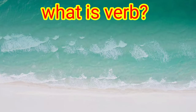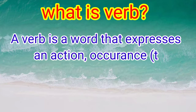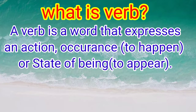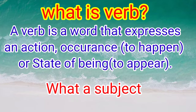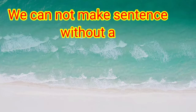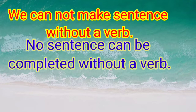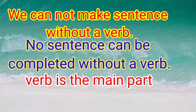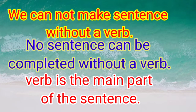These action words are called verbs. So today we will discuss about verbs. A verb is a word that expresses an action, occurrence, or state of being. Some also say: what a subject does is a verb. We cannot make a sentence without a verb — verb is the main part of a sentence.